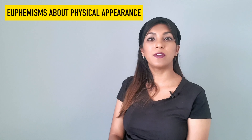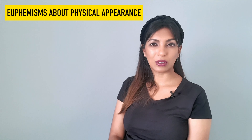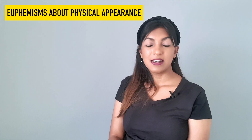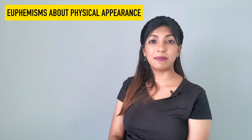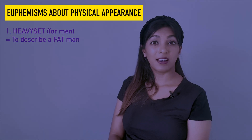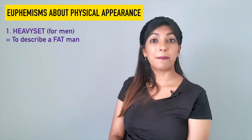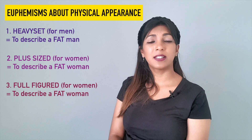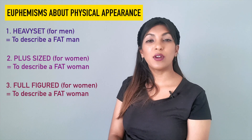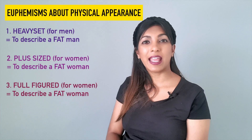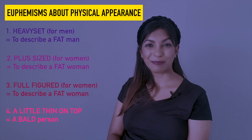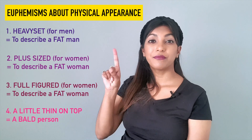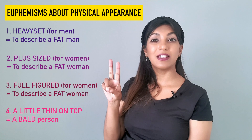Our final section covers euphemisms for physical appearance — nicer ways to describe how people look. For 'fat,' it's very important not to offend or bully someone. For men, we say 'heavy set' — for example, 'my father is a heavy set man.' For women, we say 'plus-sized' or 'full-figured.' If someone is bald or has very little hair, we say they are 'a little thin on top' — for example, 'my father is a little thin on top.'